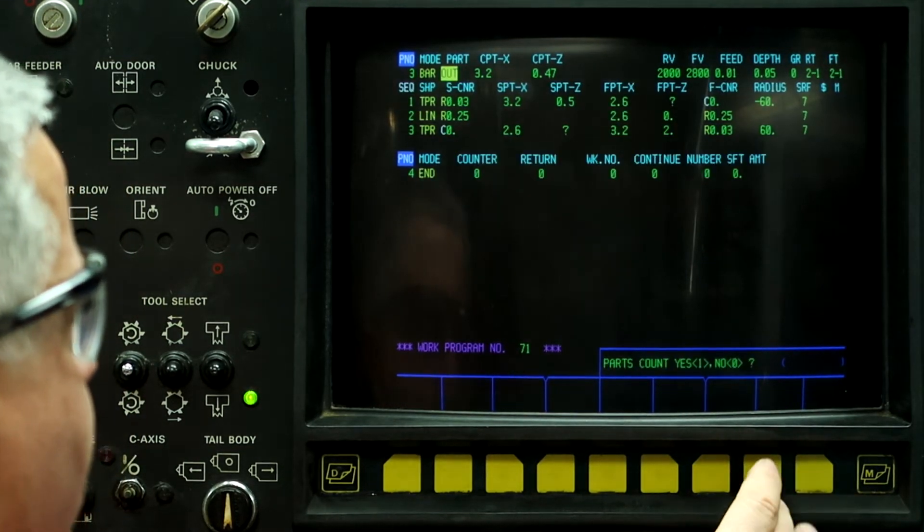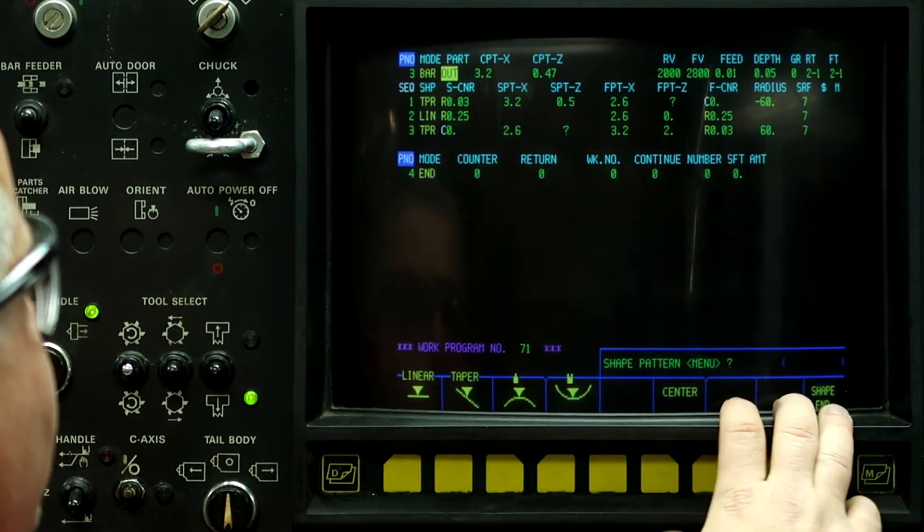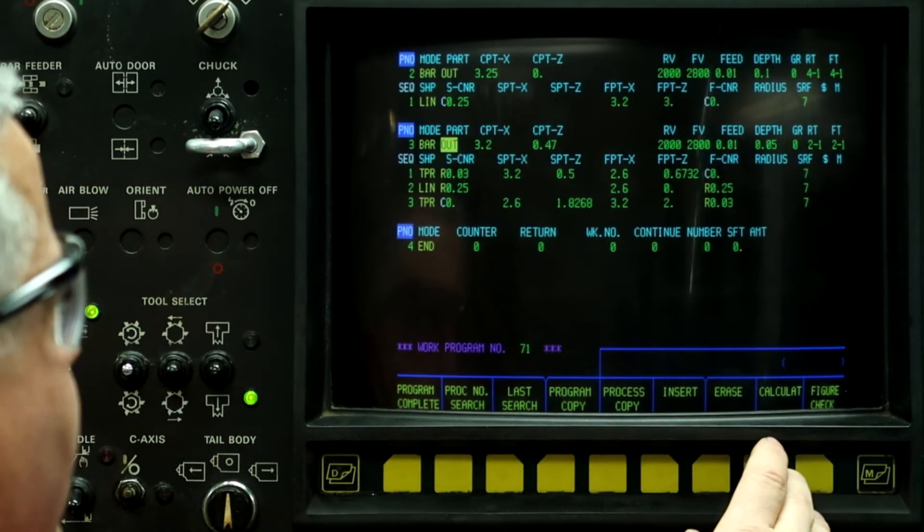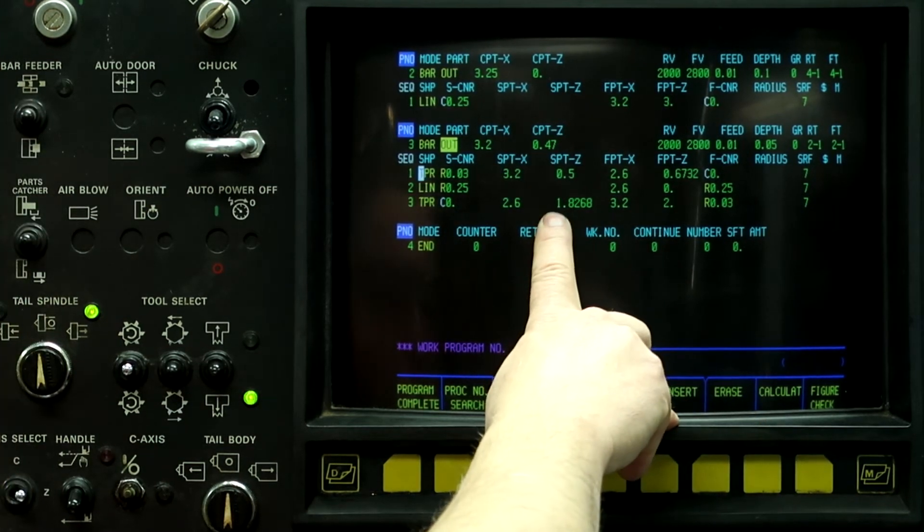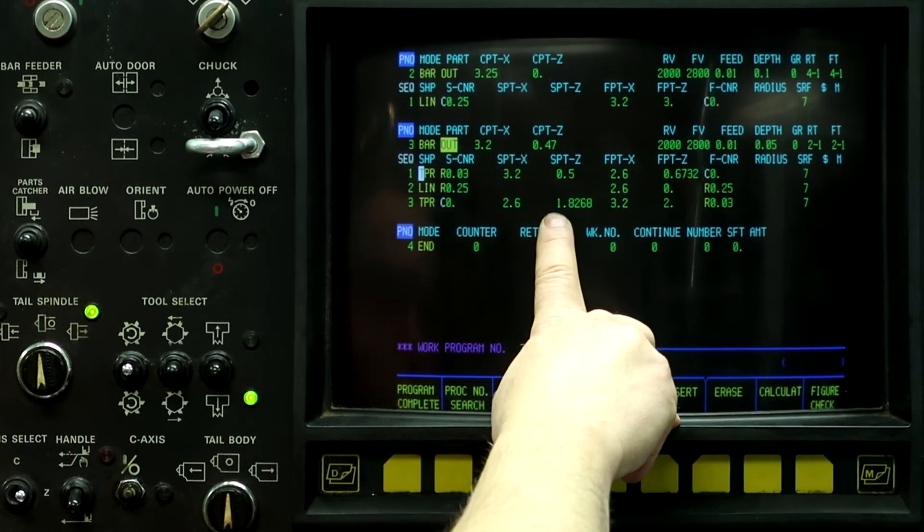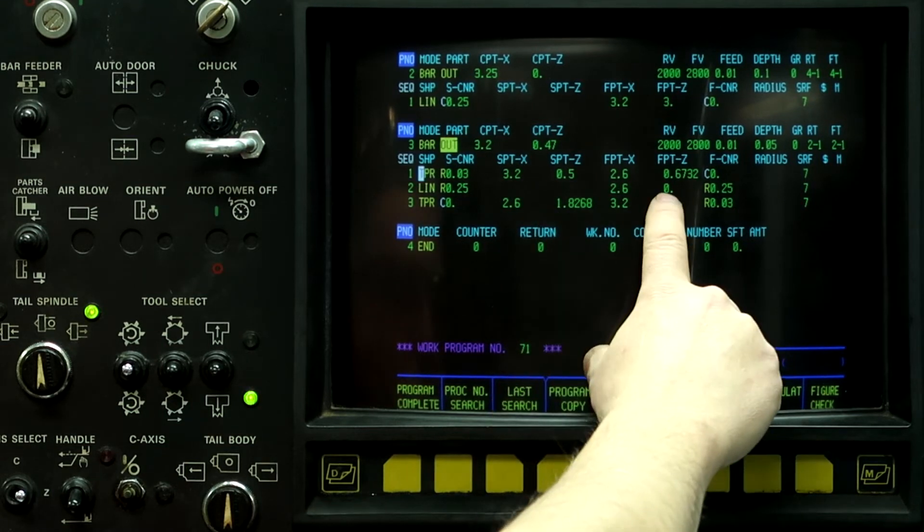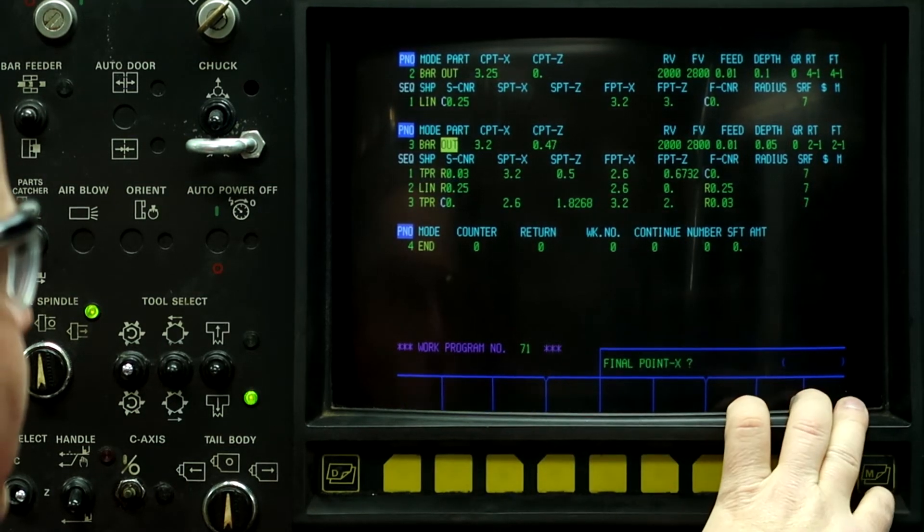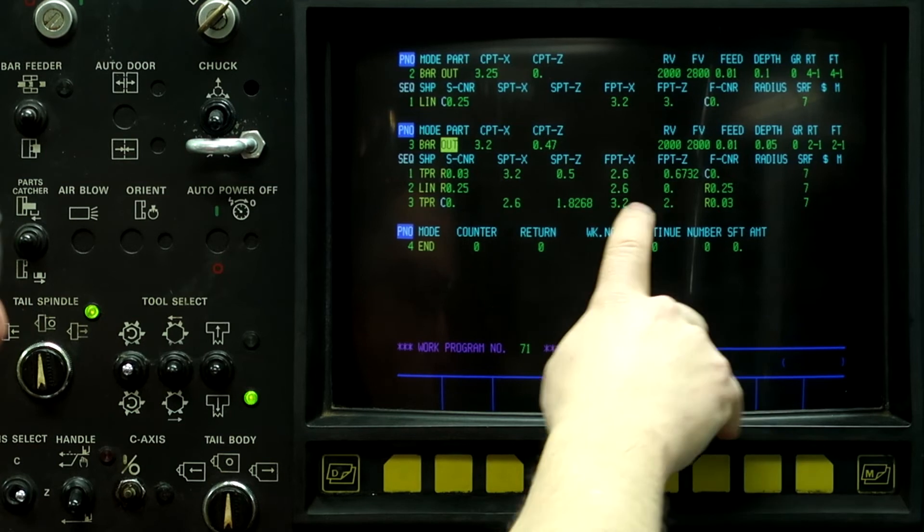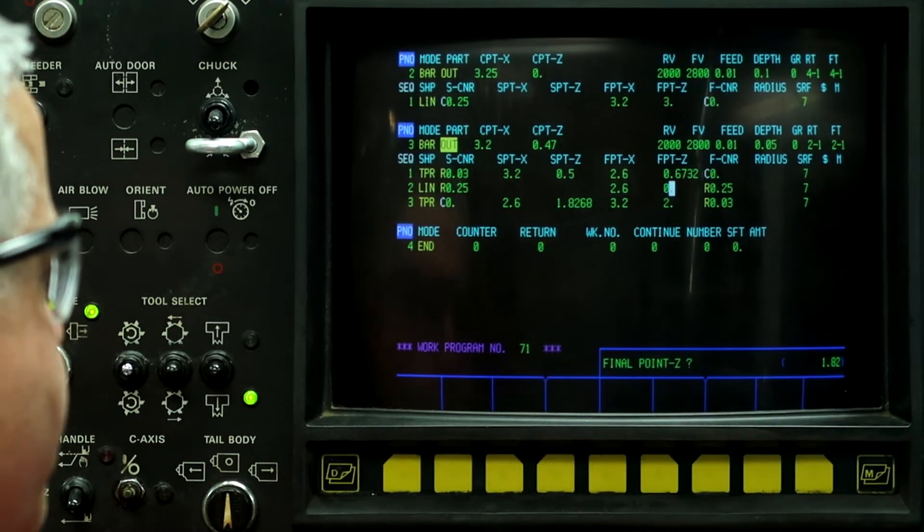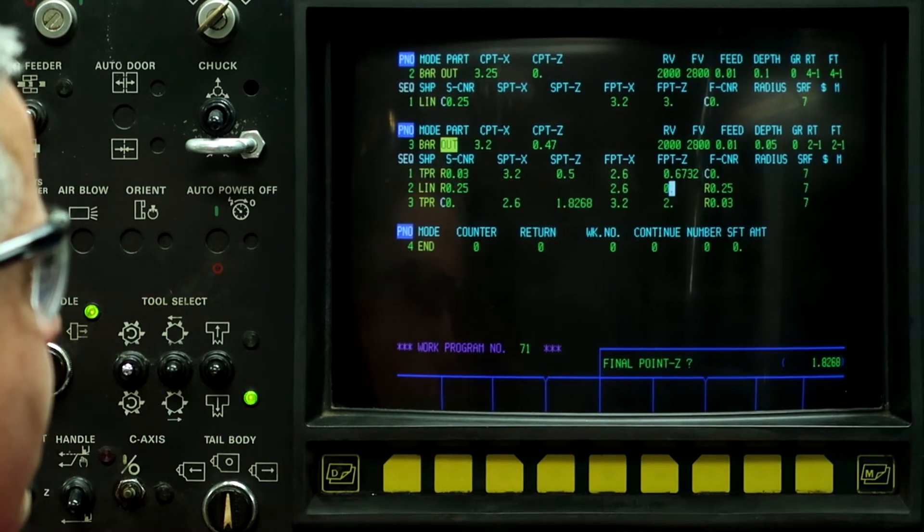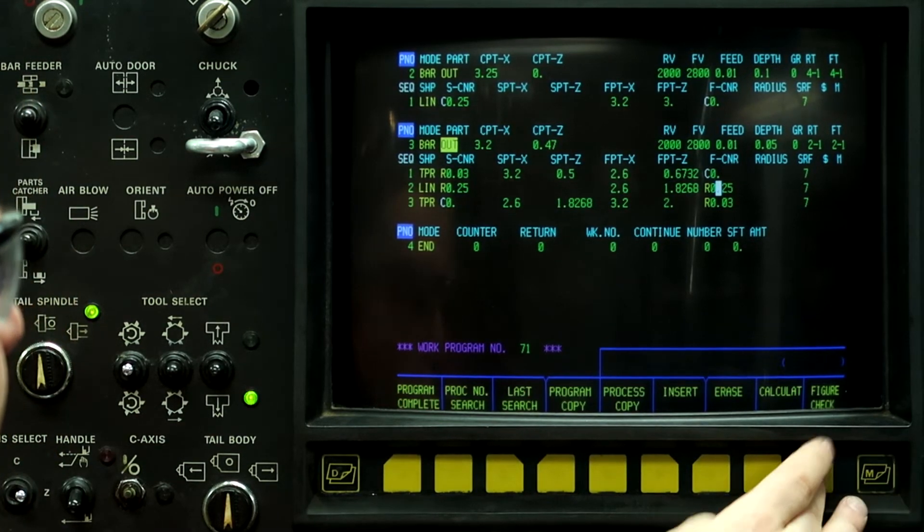And the final corner is radius 0.03 with a taper angle of 60 degrees positive. 7, down arrow, shape N. So right button, calculate. So it calculated our point of 1.8268. But we need to put it over here because it won't automatically backtrack it. So 1.8268.